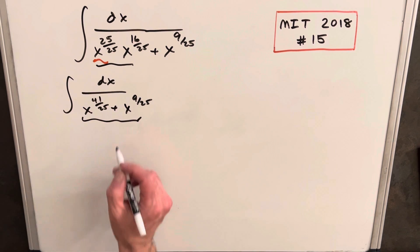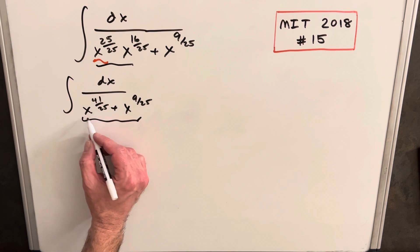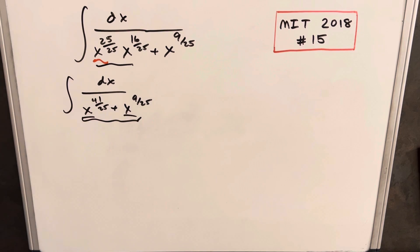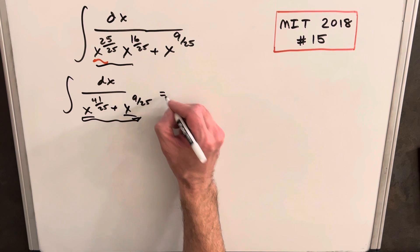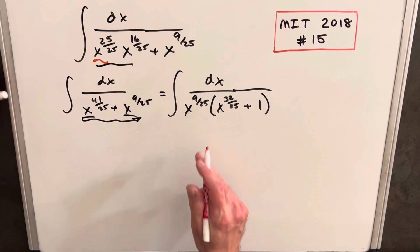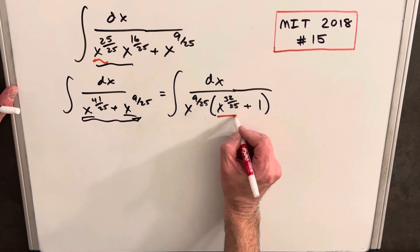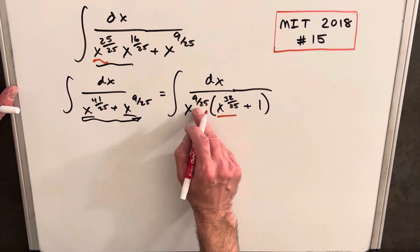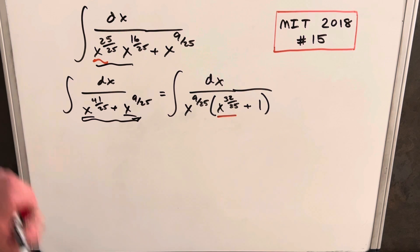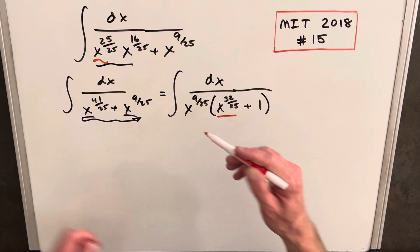If we had something in the numerator you usually don't like that, so we want to factor out either one or the other. I'm going to try to factor out x to the 9 over 25. Factoring that we end up with x to the 32 over 25 here, and then I just want to bring this term into the numerator.